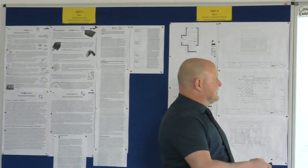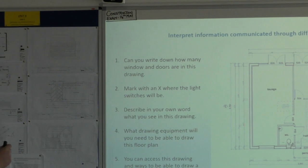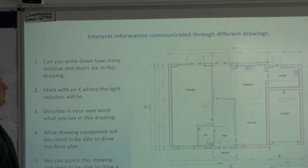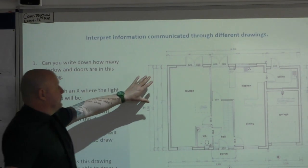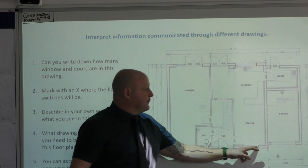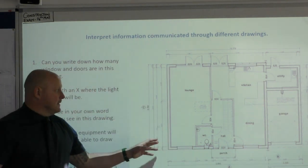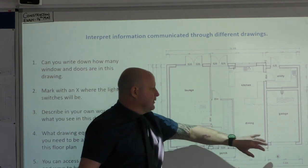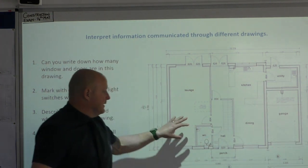Today's lesson, I'm going to move straight on to interpret information, communicating through different drawings. As you can see on the board here, this is a floor plan — quite a basic floor plan of a downstairs. We know it's downstairs because we've got our lounge, we've got our kitchen, we've got our bottom of our garage and utility room there.